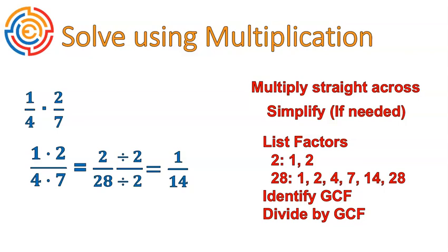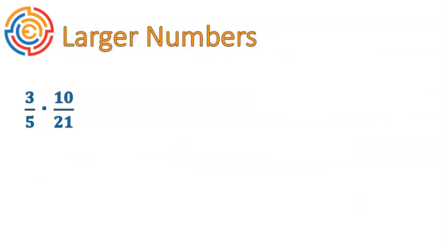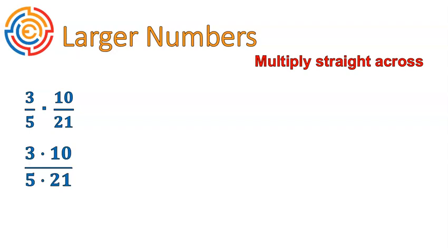All right. Now I'm going to slow things down for the next question because I'm dealing with some larger numbers. I'm going to show you a quick trick of what I do when I'm dealing with larger numbers. First off, you multiply straight across. That's no surprise. We're multiplying 3 times 10 to get 30. And 5 times 21 gives us 105.